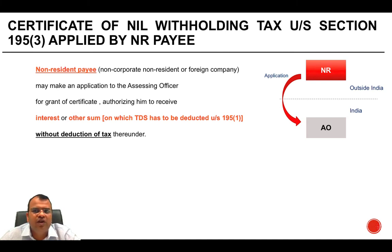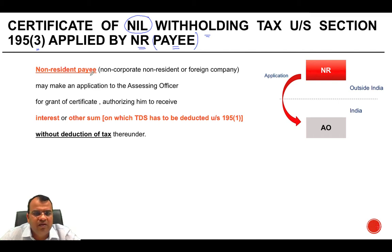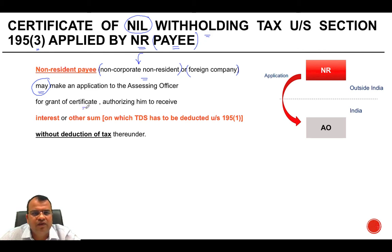Now moving to the other side: certificate of nil withholding tax under Section 195(3) applied by the non-resident payee, that is the recipient. A non-resident payee — who may either be a non-corporate non-resident or a foreign company — has the choice to make an application to the Assessing Officer for grant of a certificate authorizing them to receive interest or other sums on which TDS has to be deducted under Section 195, without deduction of tax.